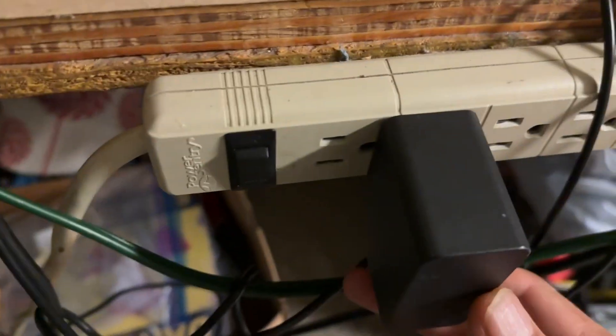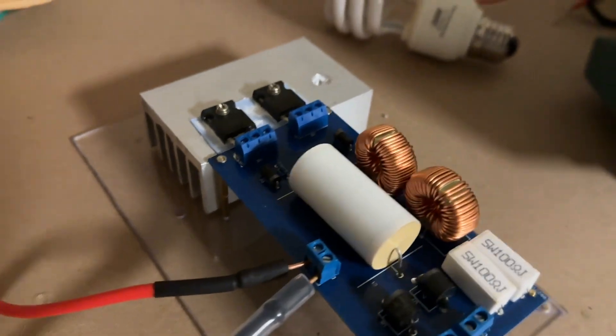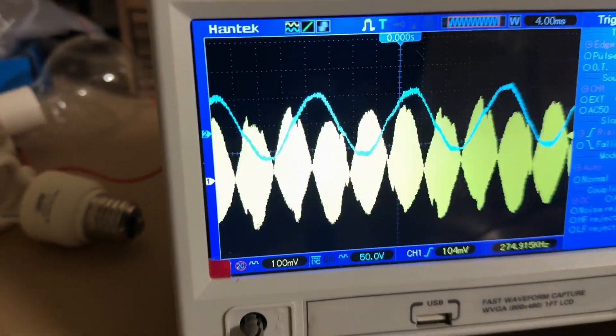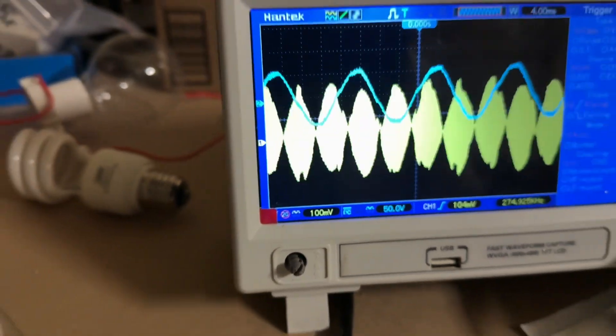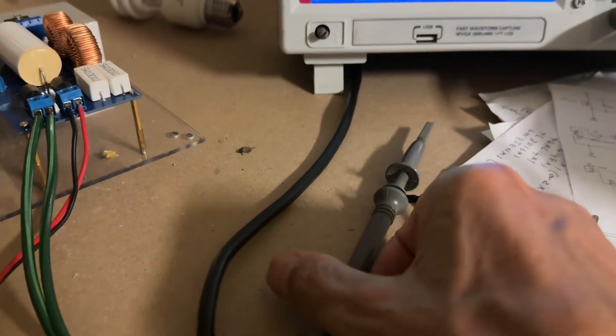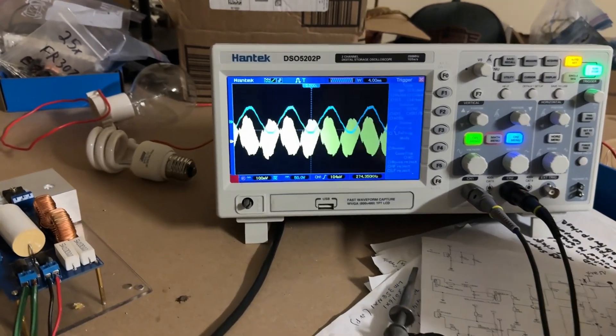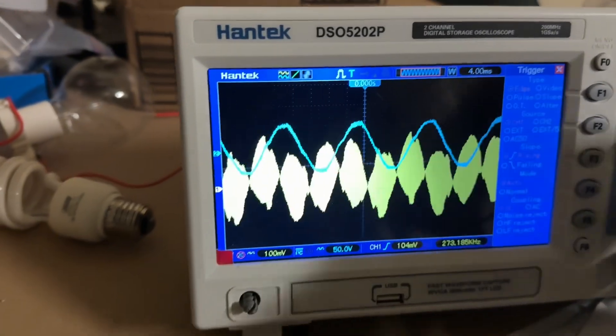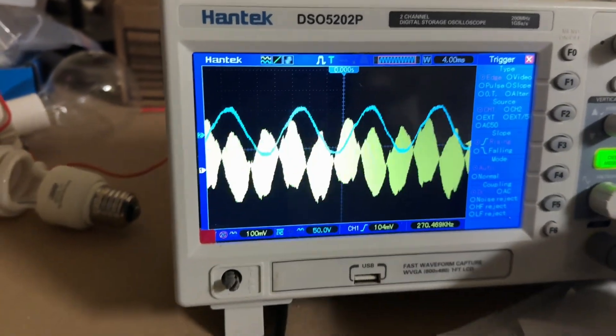Blue trace is the mains and the yellow trace is this probe that's sitting here on the table. We're just going to leave it like that sitting on the table and we're going to zoom in on this yellow trace.